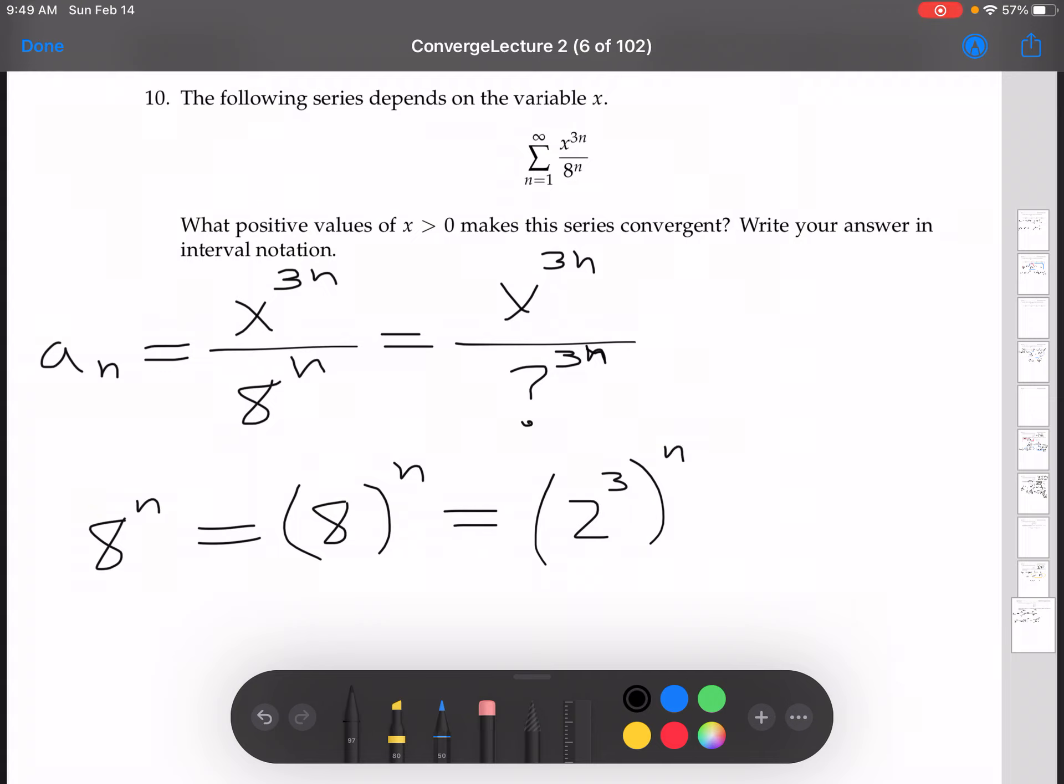And now using a rule of exponents, remember that when you have x to the m to the n, it equals x to the m times n. And so we're using that same idea here. This is 2 to the 3n. So that tells us that question mark is 2. So we'll write that in there. 2.